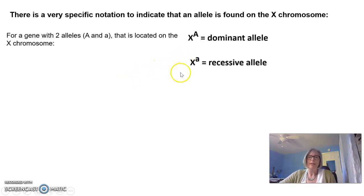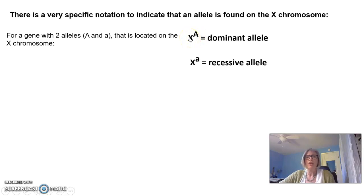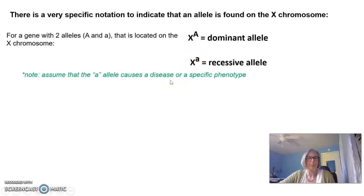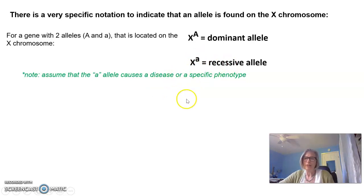We would give the designation of an uppercase A as a superscript to an X as the dominant allele. The uppercase A shows that it is dominant, and the fact that it is superscript on the X shows that it is on the X chromosome. The recessive allele has a lowercase a also as a superscript on the X. We're going to assume that the lowercase recessive allele causes a disease or a specific visible phenotype.